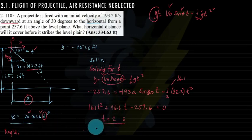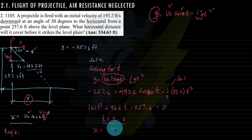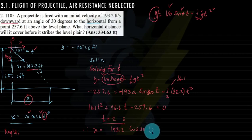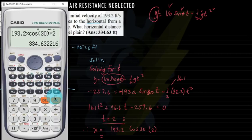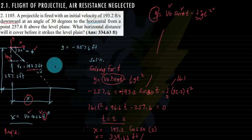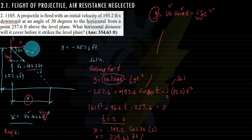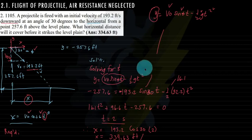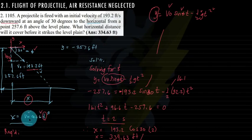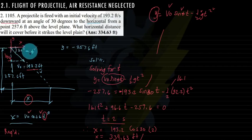We can now solve for x: x equals v sub o cosine theta times t, so x equals 193.2 times cosine 30° times 2, giving x equals 334.63 feet. As an additional note: if the initial velocity is purely horizontal (theta = 0), cosine 0 = 1, so x simplifies to v sub o times t, and the y equation becomes one-half g t squared.